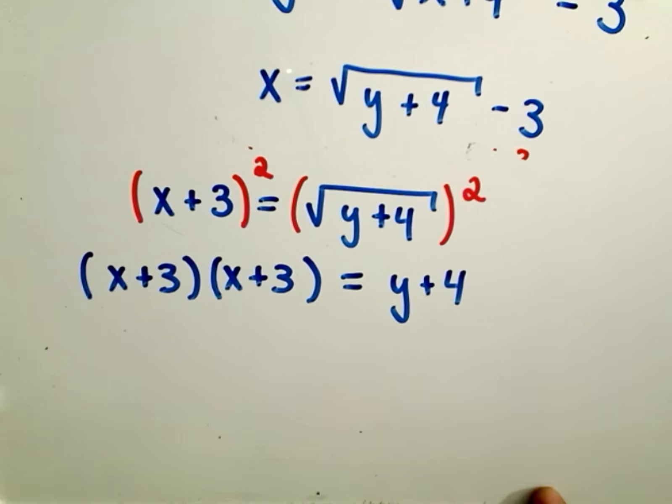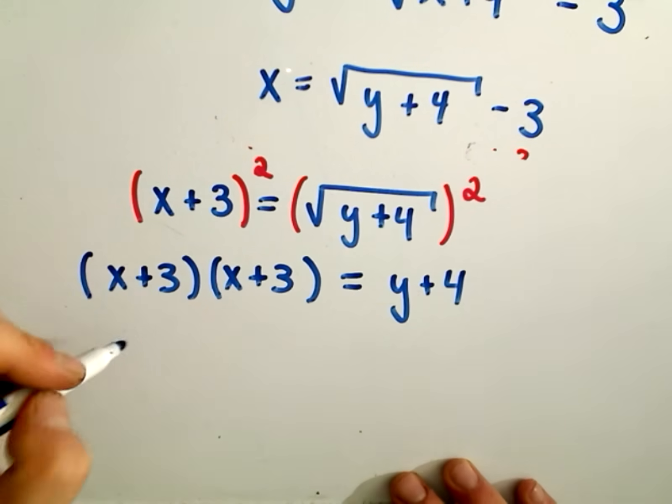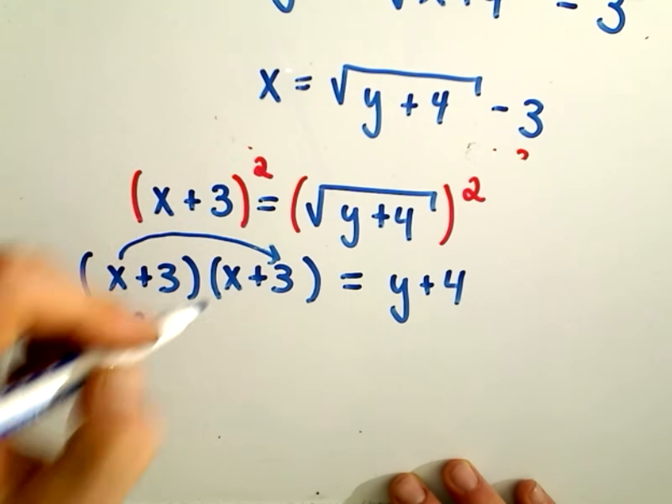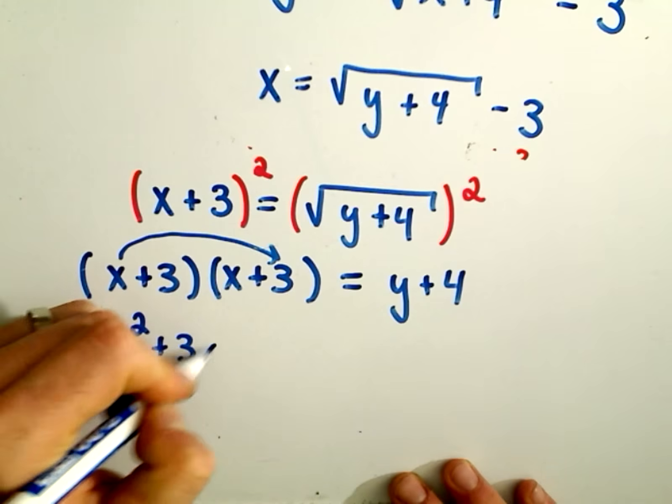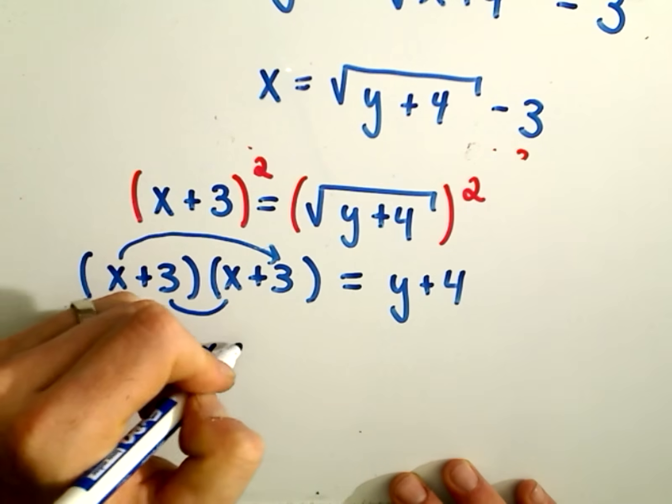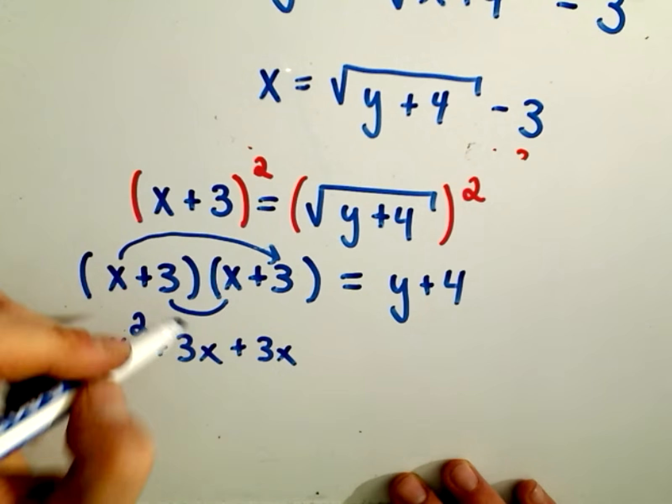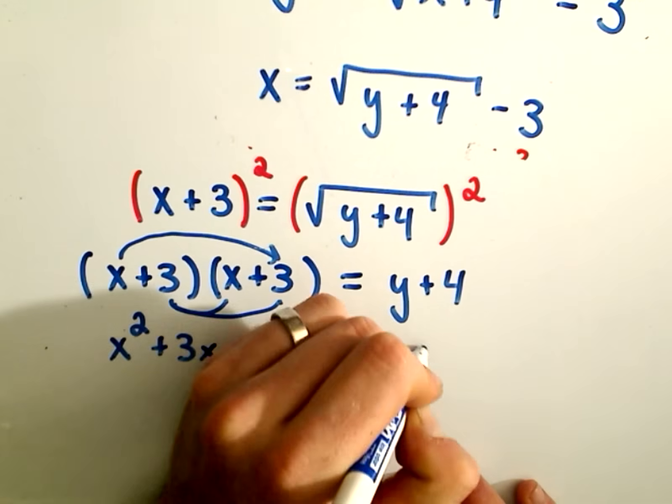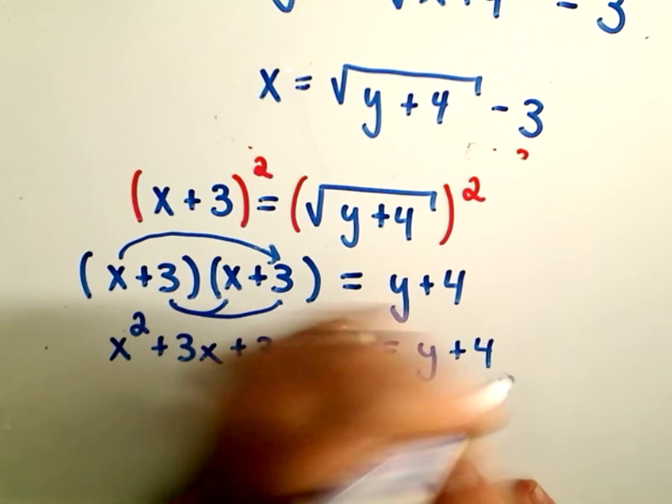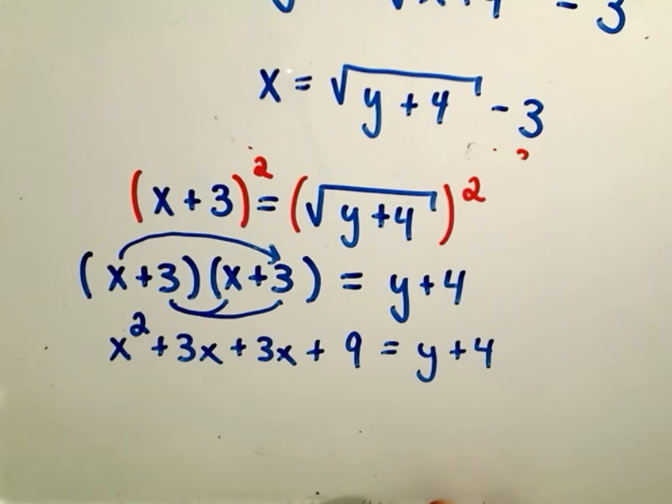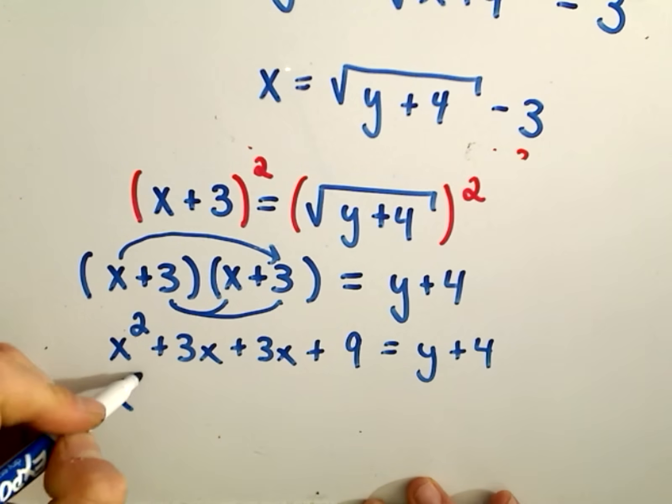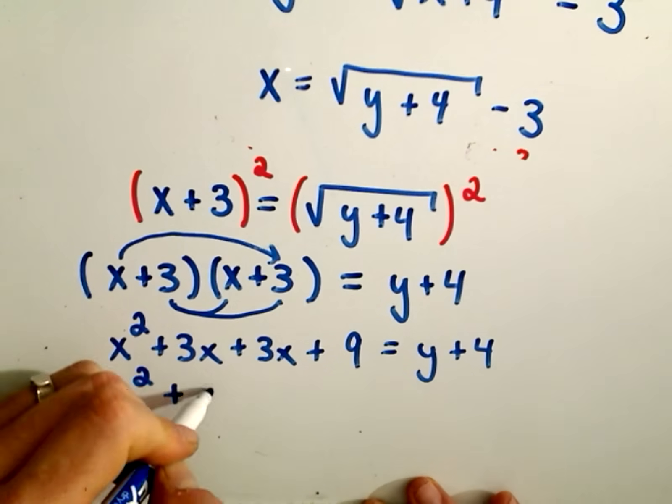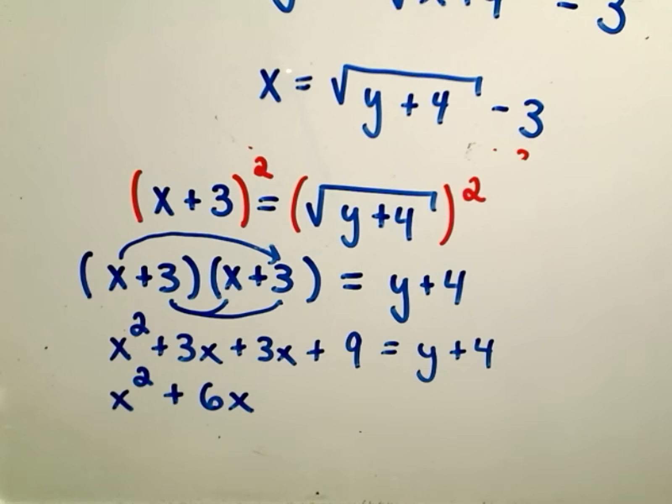So now if I FOIL all this out, we'll get x times x, which is x squared. We'll get x times 3, which is going to give us a positive 3x. On the inside, we'll get another positive 3x. And then 3 times 3 will give us a positive 9 equals y plus 4.